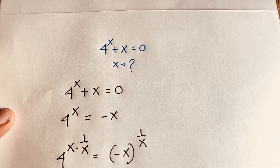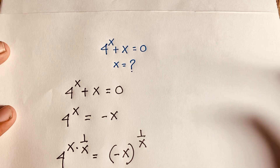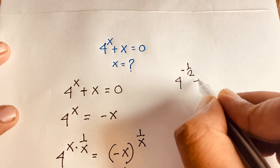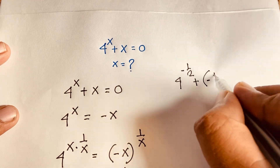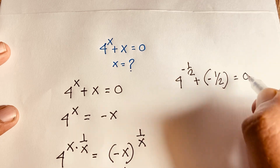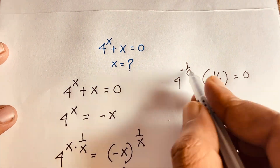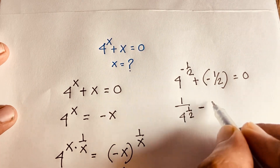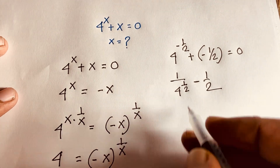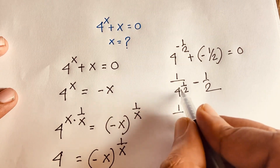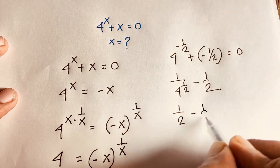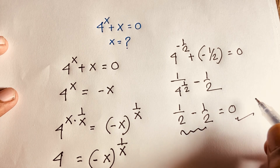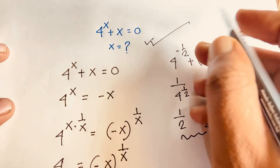Let's verify: 4 to the power x plus x equals 0. With x equal to negative 1 over 2, we get 4 to the power negative one-half plus negative one-half. That is 1 over 4 to the half minus 1 over 2. The square root of 4 is 2, so 1 over 2 minus 1 over 2 equals 0. Confirmed — x equals negative one-half is our final answer.